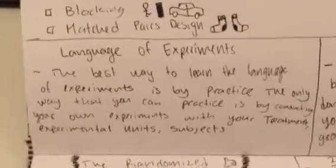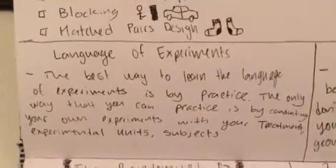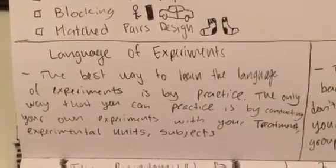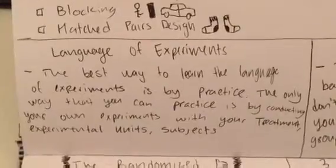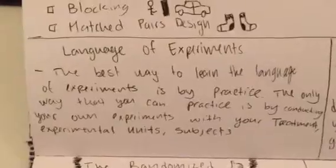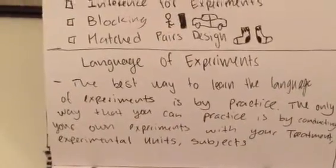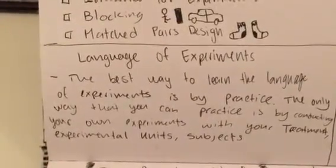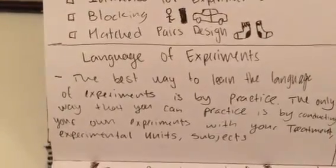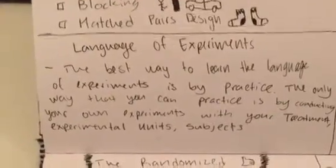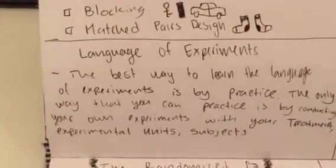Next, we have language of experiment. The best way to learn the language of experiment is by practice. The only way that you can get practice is by conducting your own experiment with your treatment, experimental units, and subjects. Language of experiment means having more experience with the experiment that you're conducting. To have more practice means to make more experiments regarding topics that interest you.